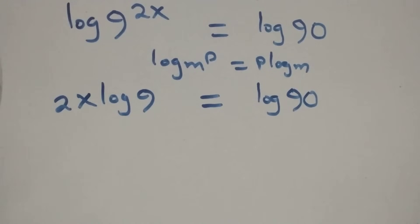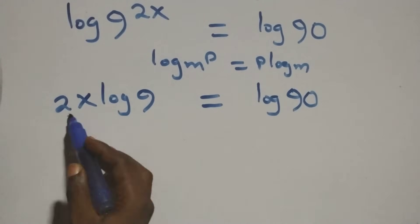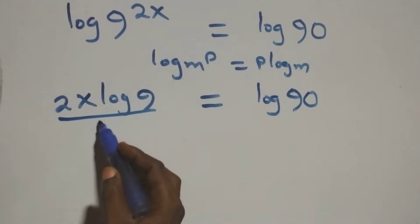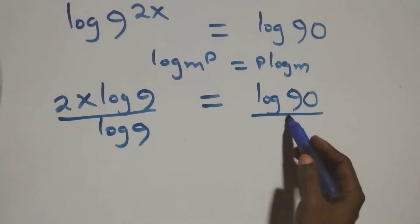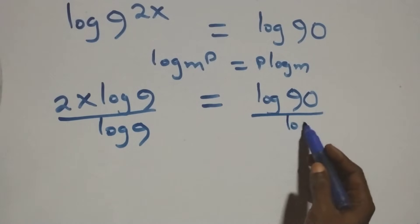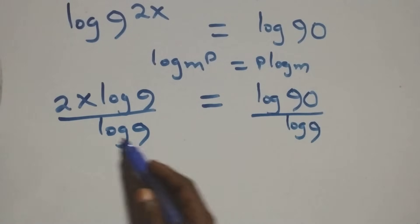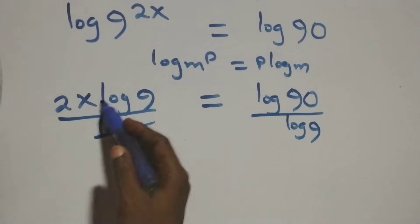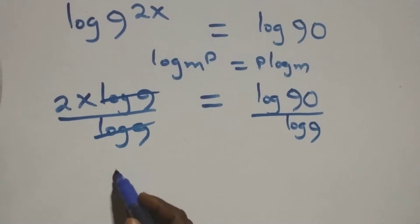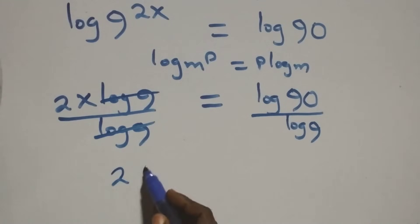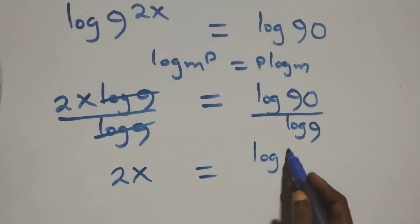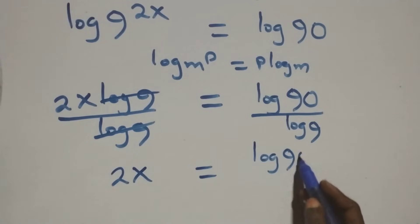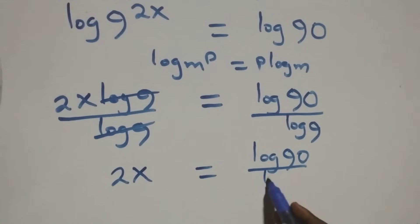The next step here, we divide both sides by log 9 — divide this side by log 9, also divide this side by log 9. Which implies log 9 cancels each other, and we have 2x left, which is equal to log 90 over log 9.